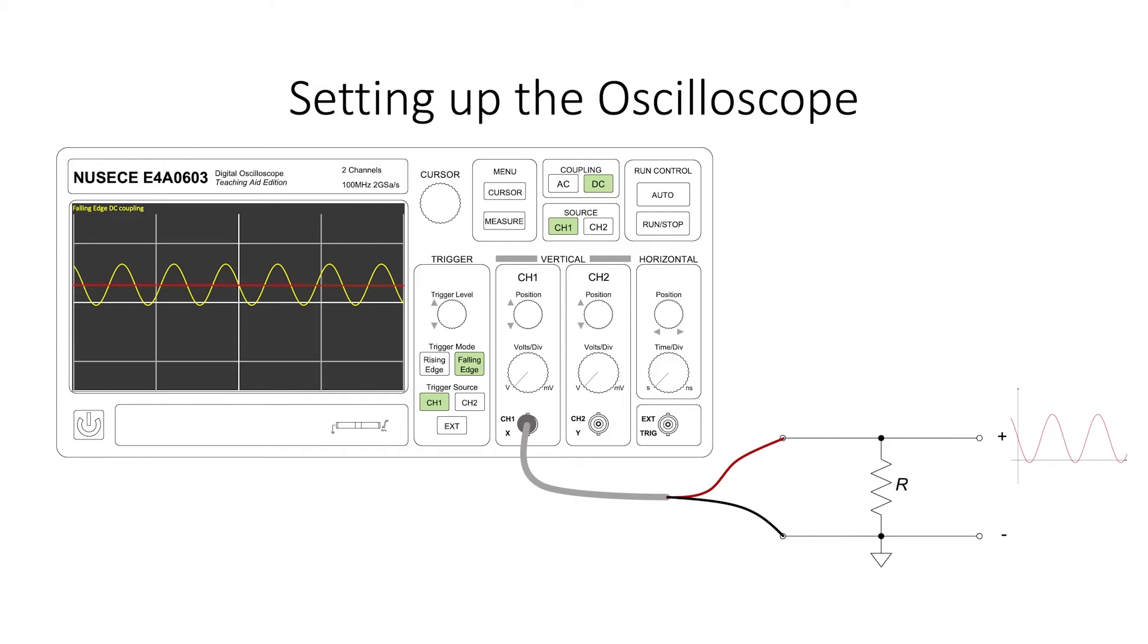DC coupling on an oscilloscope refers to the fact that DC voltages can be measured, not just AC voltages. For beginning users of an oscilloscope, I recommend that you use DC coupling. This ensures that the voltages displayed are equivalent to the voltages actually apparent on the circuit.